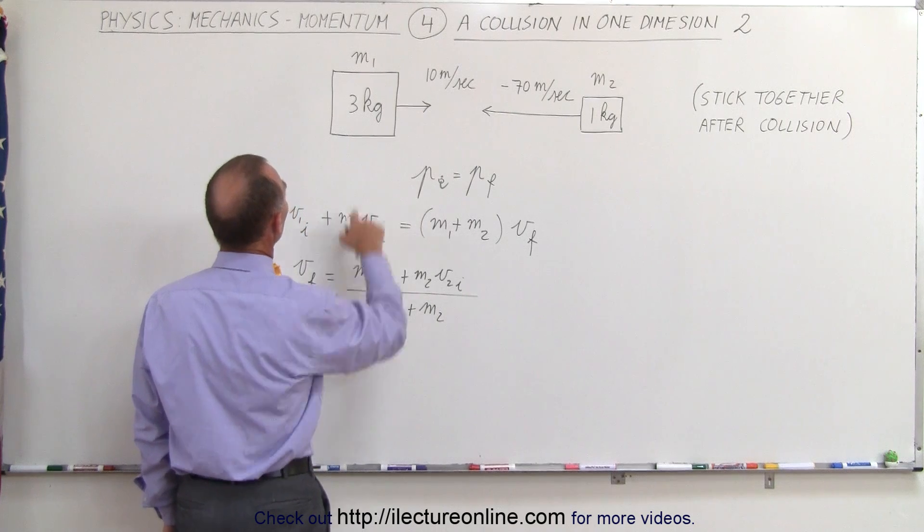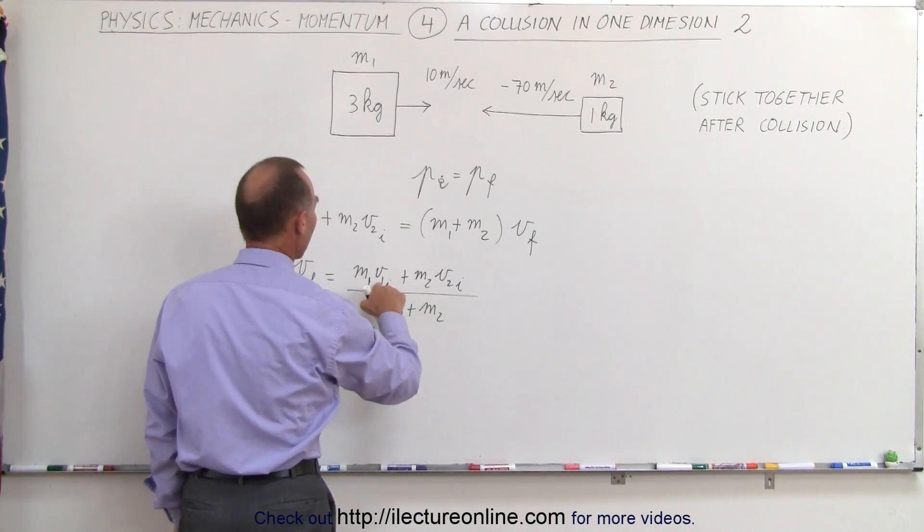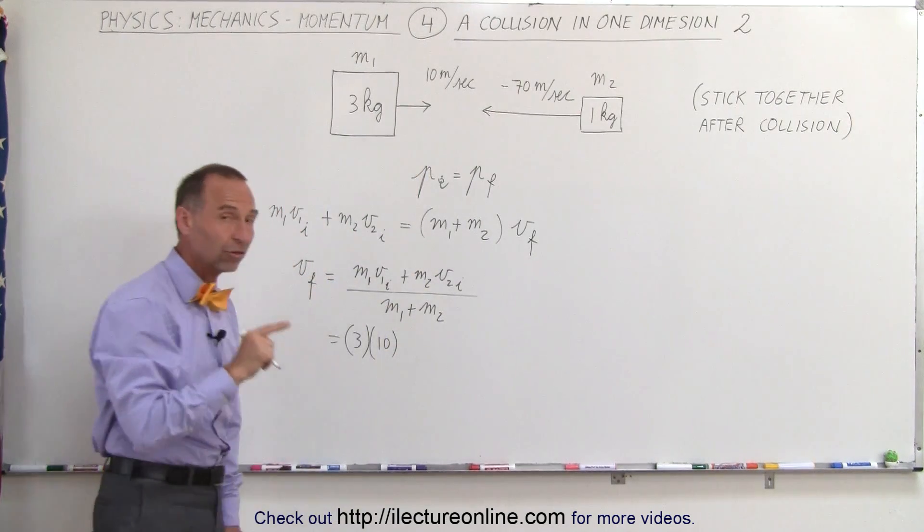So this is M1 and one is three kilograms. I'll leave off the units, makes it a little bit easier to see. V1 initial is 10 meters per second. That's positive because it's to the right,